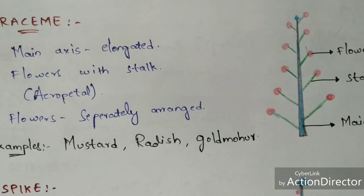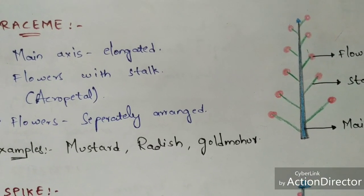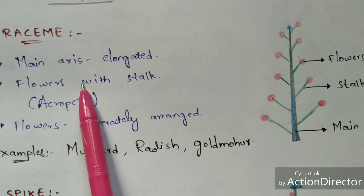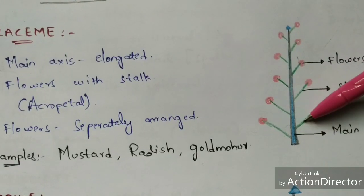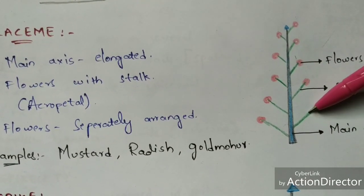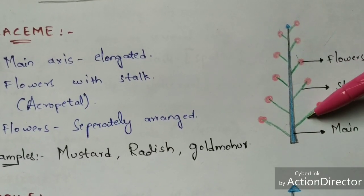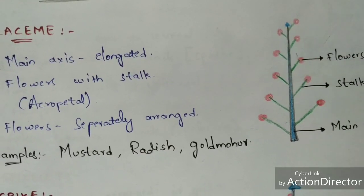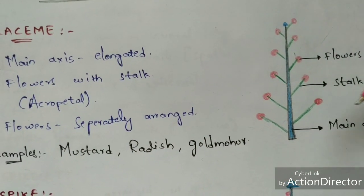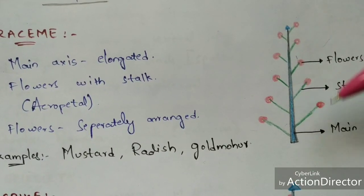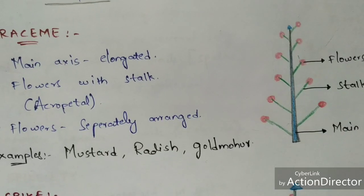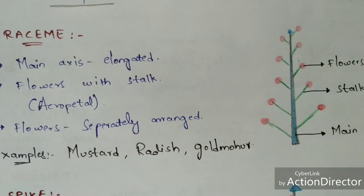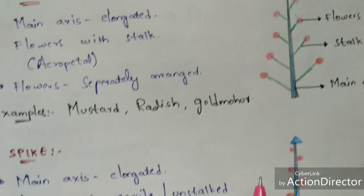Coming to the types of racemose inflorescence — the first one is raceme. Raceme is totally similar to the racemose definition. The main axis is elongated, and here the flowers consist of a stalk. The green color I have drawn is the stalk, which mainly helps in the attachment of the flower to the main axis. These flowers are arranged in acropetal manner — from bottom to top the size decreases — and flowers are separately arranged. Examples: mustard, radish, and gold mohur.